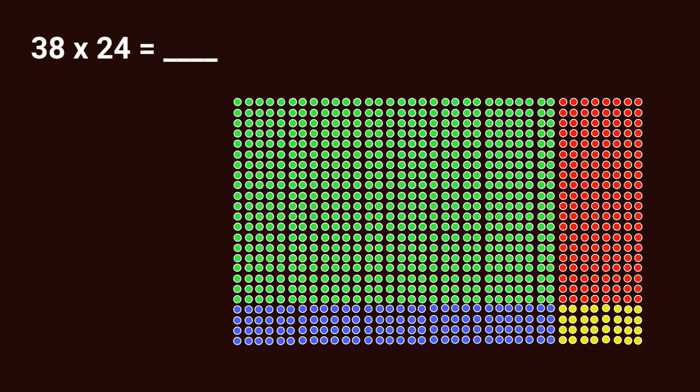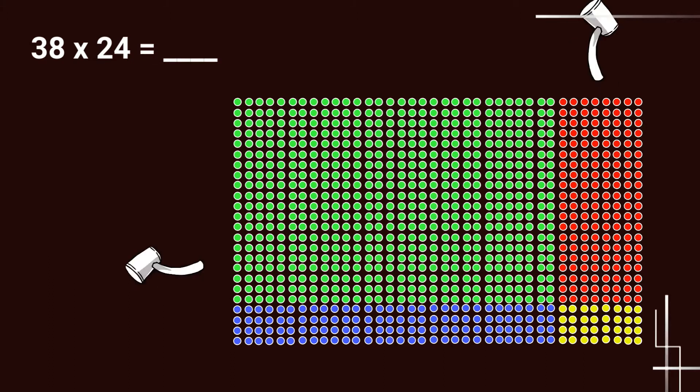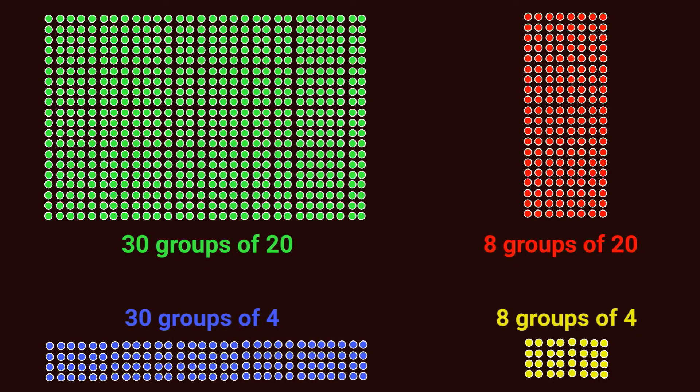You see right here I have my green section, and this is going to be 30 groups of 20 in each. Down here in my blue section, I have 30 groups of 4 in each. So I'm decomposing both of my factors into smaller groups to make this easier. In my red section, I have 8 groups of 20 in each. And in my yellow section, I have 8 groups of 4 in each. I broke it apart using my tens and ones place value to make this multiplication easier.